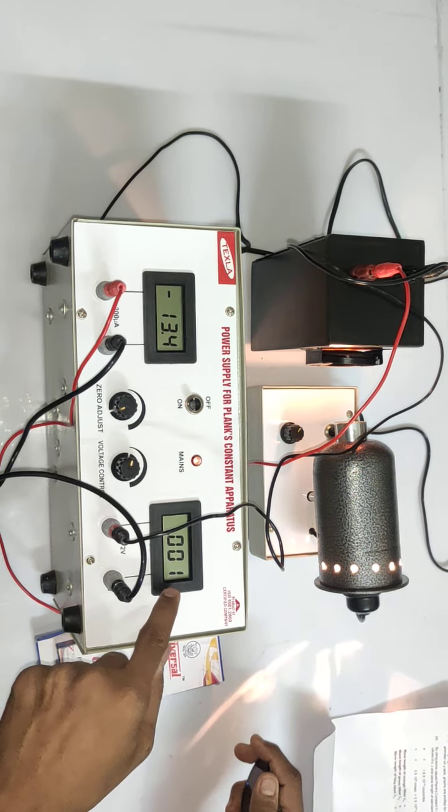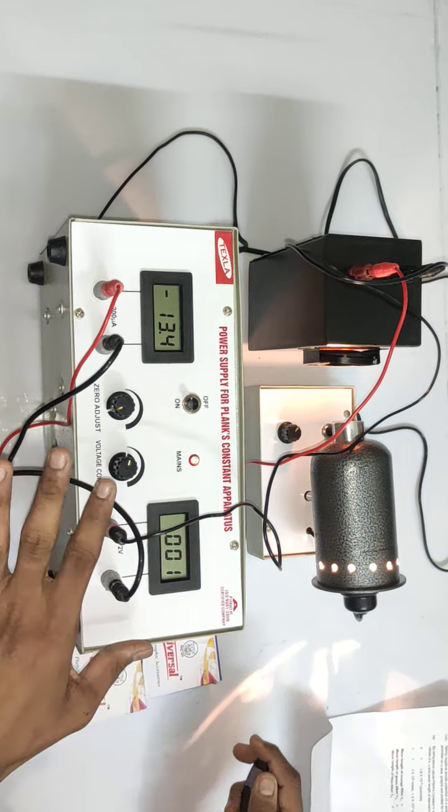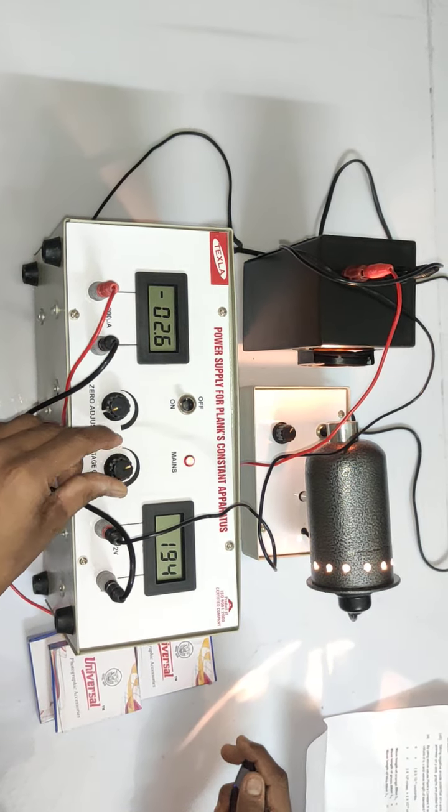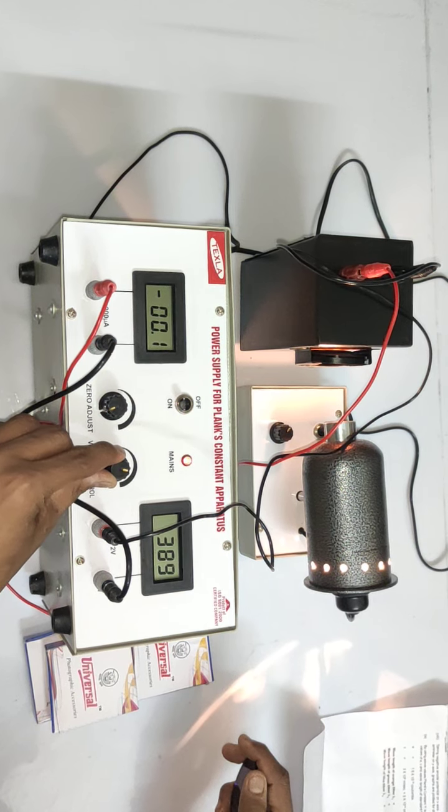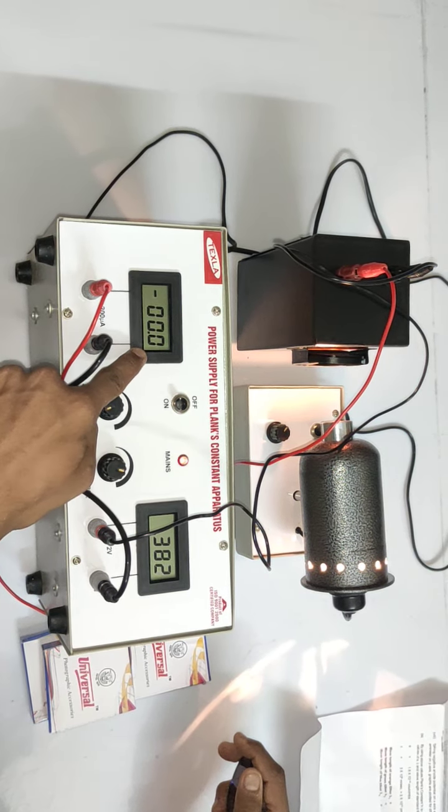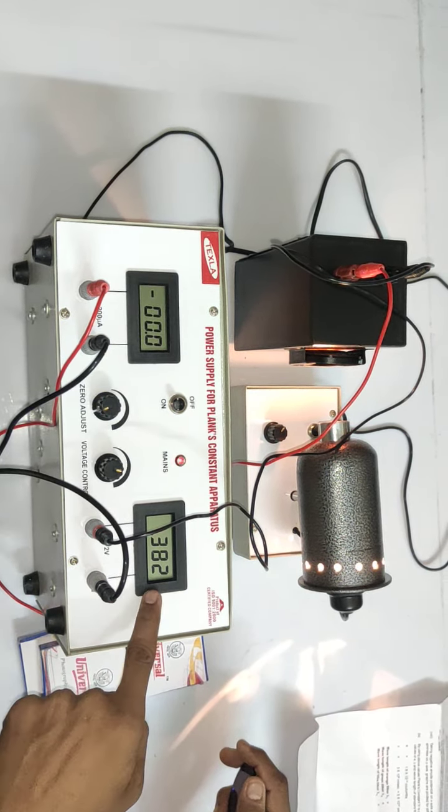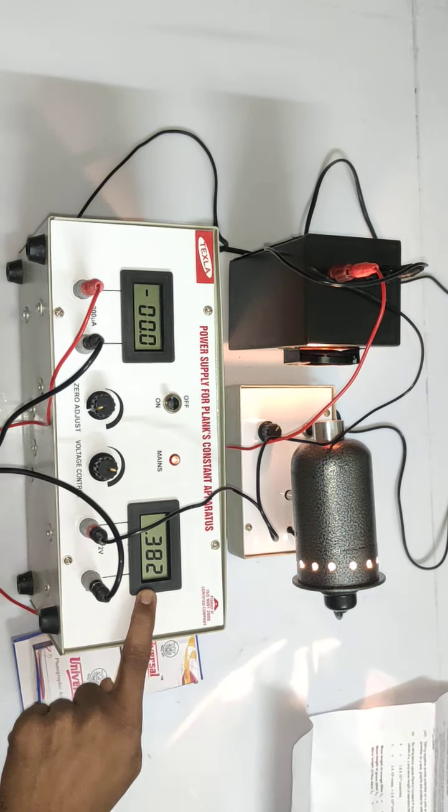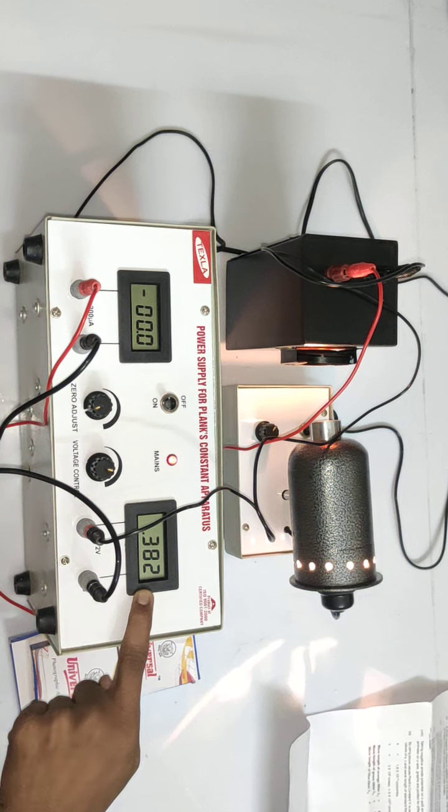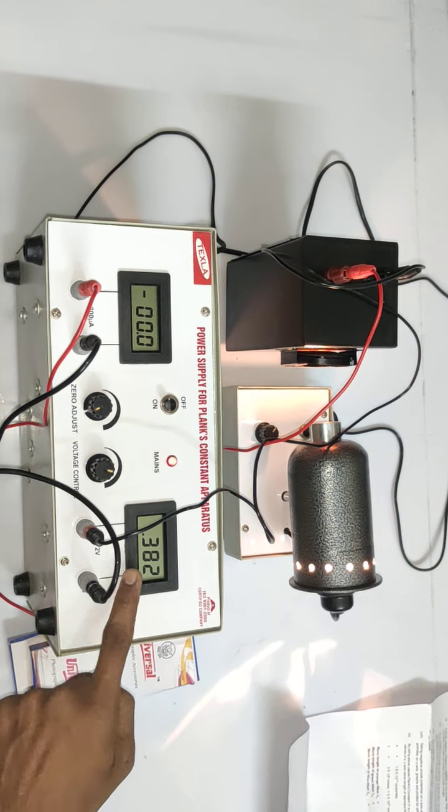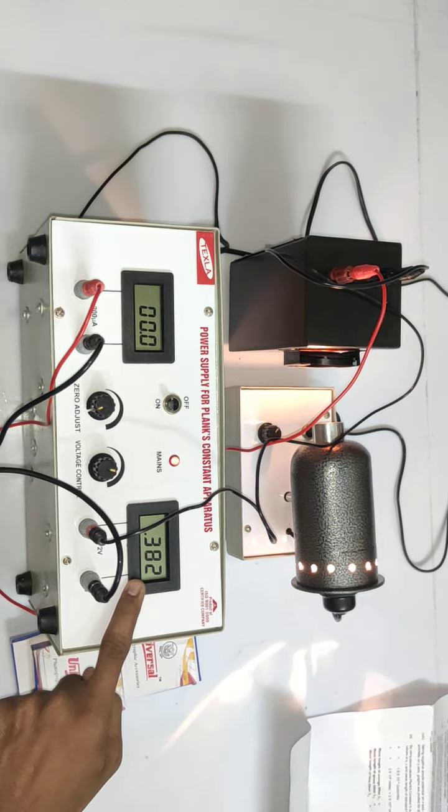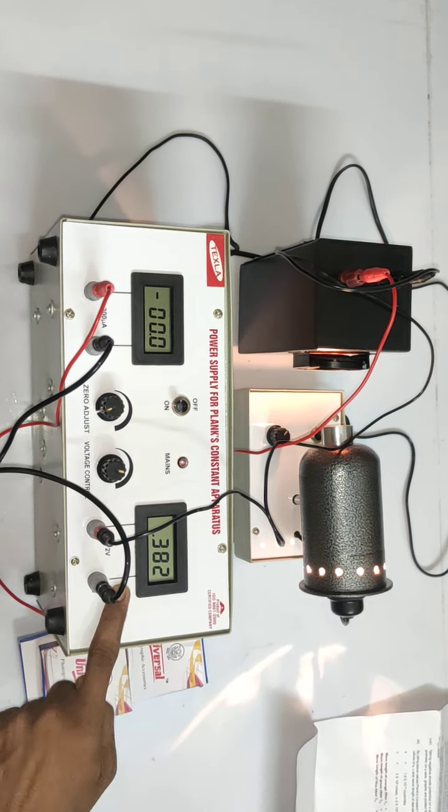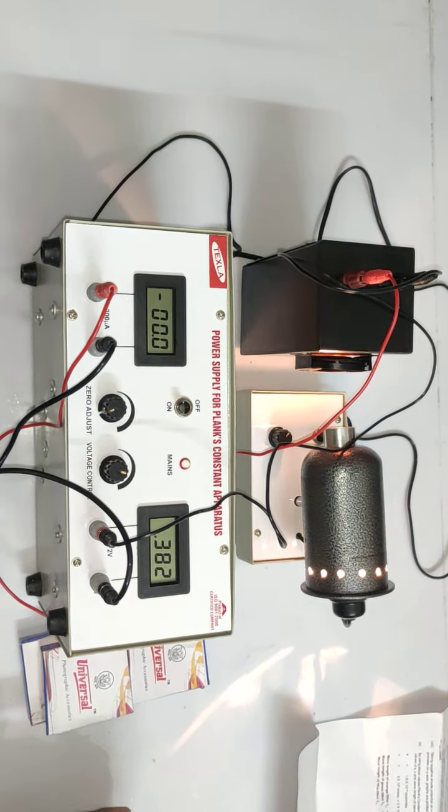I am now applying the voltage such that the current reading gets zero. If you want, you can note down values in table form, but for plain condition you need only a single reading. Wherever the current is getting zero, we note the voltage reading. For the orange filter, the stopping potential voltage is 0.382 volts.